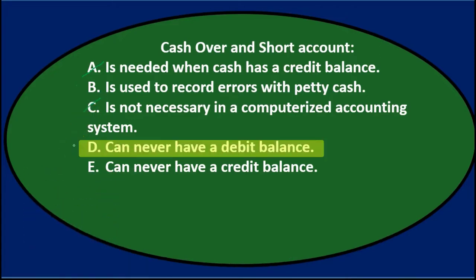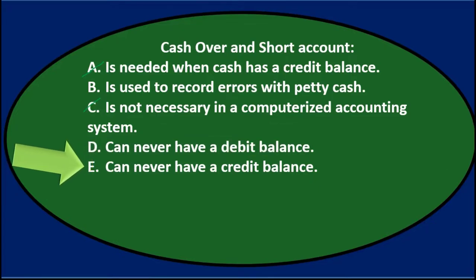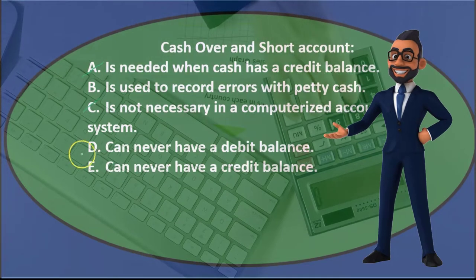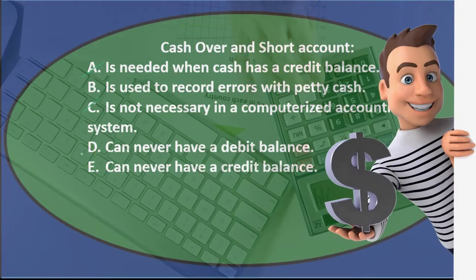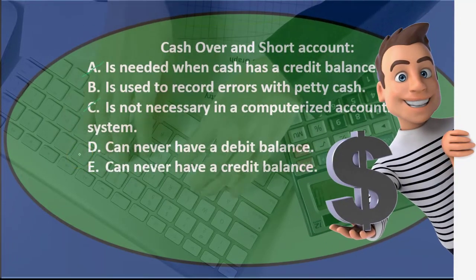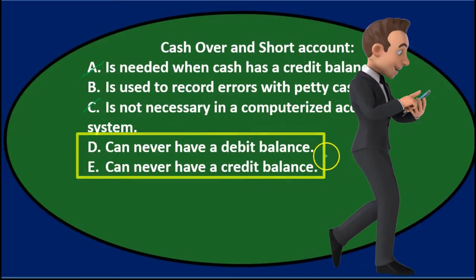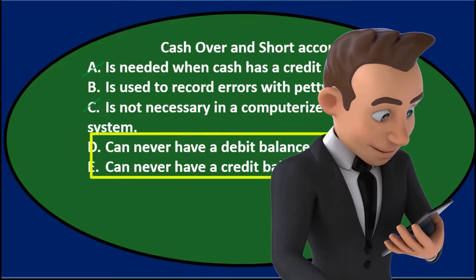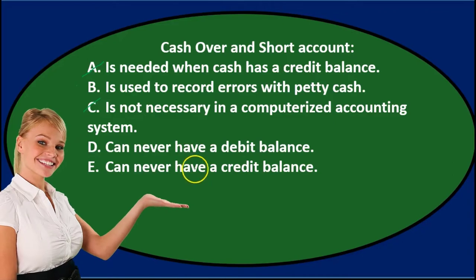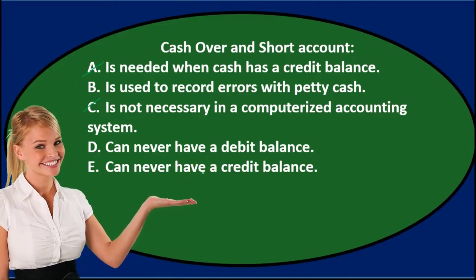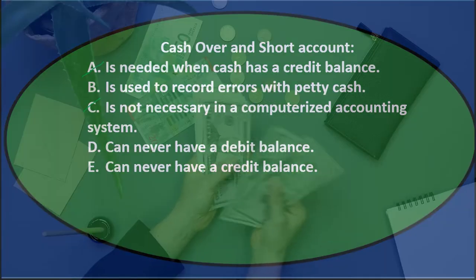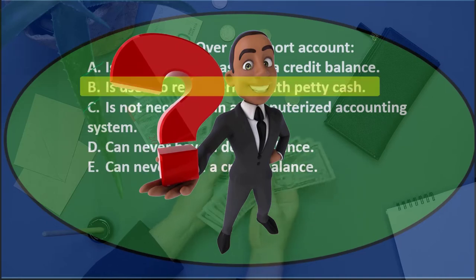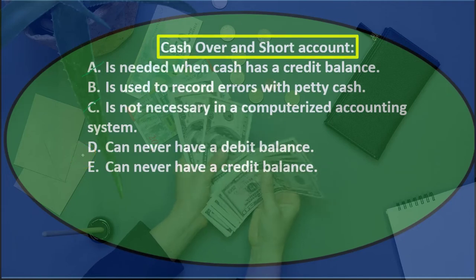D says it can never have a debit balance, and E says it can never have a credit balance. When two options are totally the same except for one word — debit or credit — one of them is often the correct answer. But in this case, both D and E are actually wrong because the cash over short account can have either a debit or credit balance. That's the unique thing about this account: it doesn't have a normal balance like most accounts because it can flip to either side depending on whether cash is over or short relative to what the register reports.